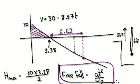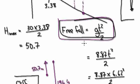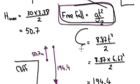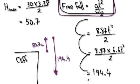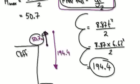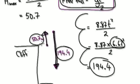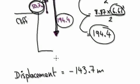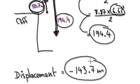Jump to the free fall formula and calculate the distance. This is the distance it takes to get to the maximum height, and this is the distance covered after falling for 6.62 seconds — that's the distance covered by the free fall. If you want to know the displacement, take the max height distance, subtract the free fall distance, and stick a minus in front of it. That gives us our answer.